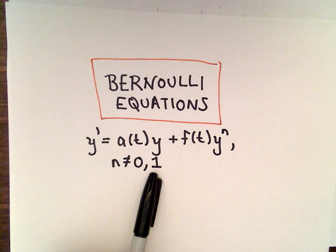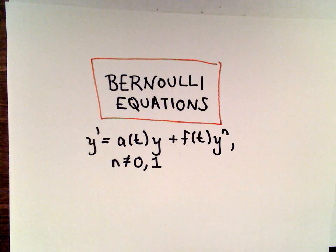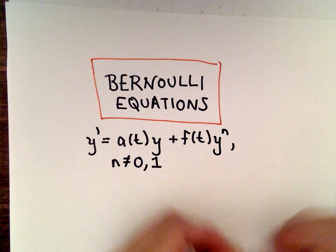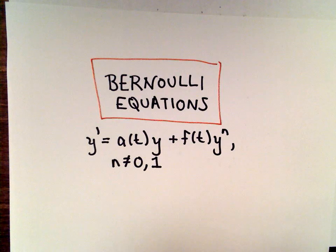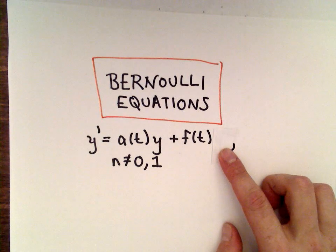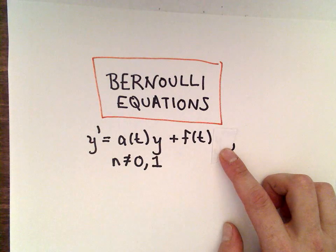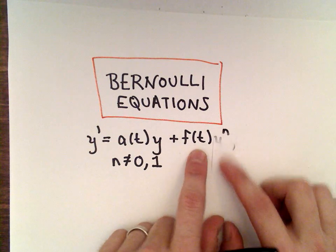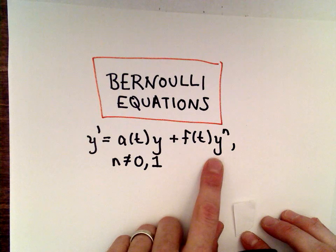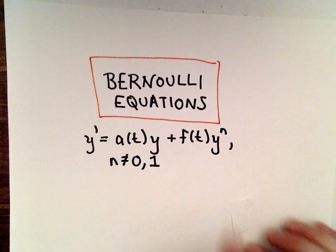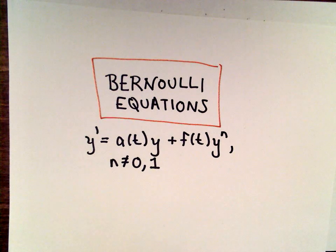So the issue here is, usually you see this when you're talking about linear equations. The idea is, if this term y^n wasn't there, so if it just looked like this instead, we have techniques to solve these types of equations. But the problem is, when we throw in this term y^n, those techniques no longer work.